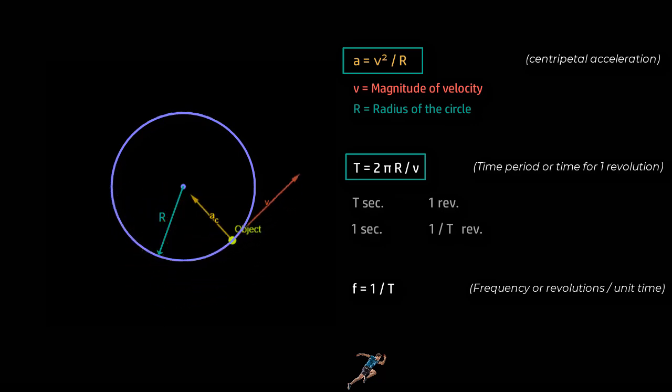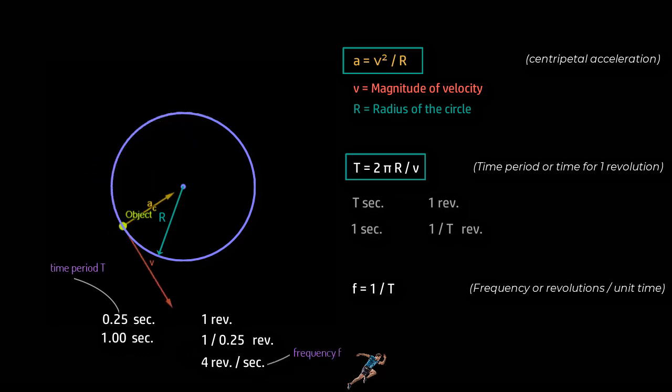So if an object, say, takes 0.25 seconds to do one revolution, that therefore is the time period, then in one second, it can do one upon 0.25 revolutions or four revolutions per second.